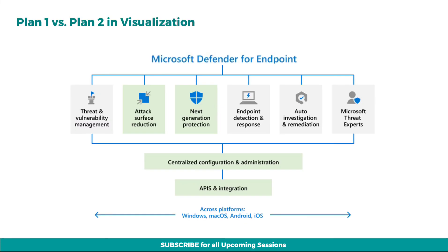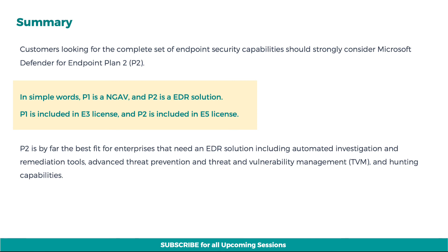To summarize, here is a diagram that showcases Plan 1 and Plan 2. Plan 2 includes the entire suite of EDR capabilities mentioned. Plan 1 includes only the capabilities highlighted in green — specifically next-gen antivirus capabilities and the attack surface reduction module only, while other modules come with Plan 2. Customers looking for the complete set of endpoint security capabilities should strongly consider Microsoft Defender for Endpoint Plan 2. In simple words, Plan 1 is a next-gen antivirus and Plan 2 is an EDR solution. Plan 1 is included in the E3 license, and Plan 2 is included in the E5 license. Plan 2 is by far the best fit for enterprises that need an EDR solution including automated investigation and remediation tools, advanced threat prevention, threat and vulnerability management, and hunting capabilities.